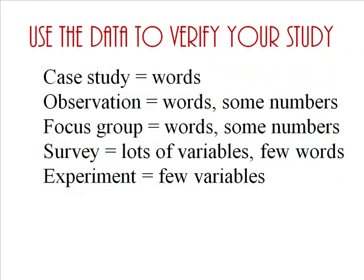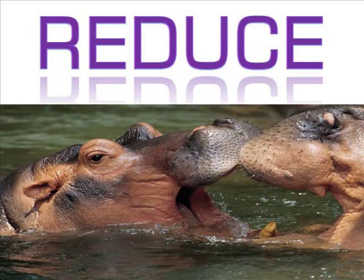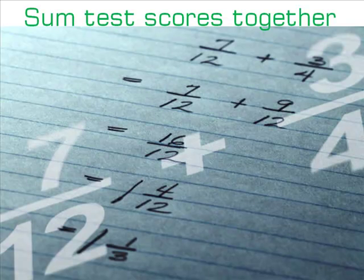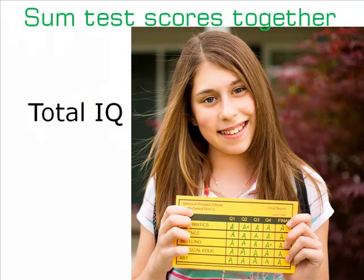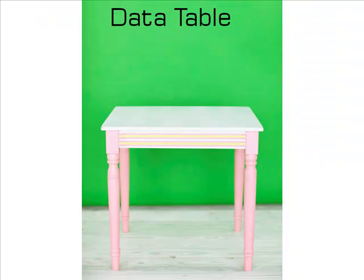After you are sure the data in front of you matches your type of study, it's time to reduce the data as much as possible. If there are multiple test items, total them into one score. In our case, we'll use total IQ instead of subtest scores, and we'll limit ourselves to only IQ and handedness. Now that we have our data in its smaller form, we can begin to organize the numbers.